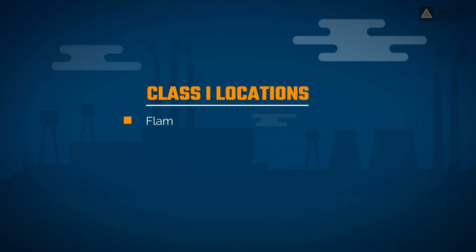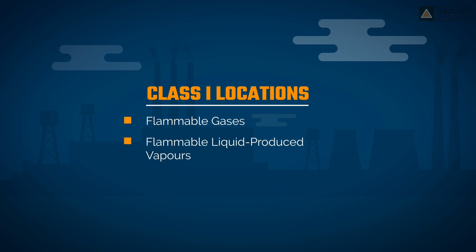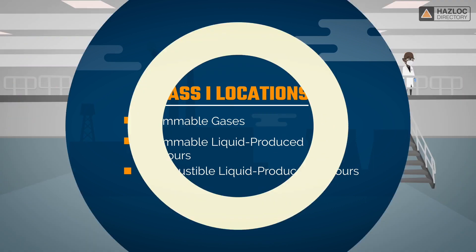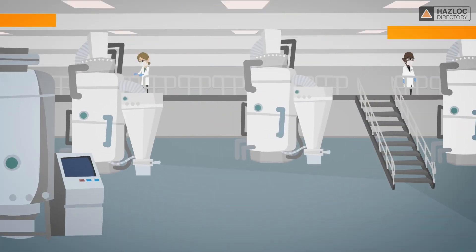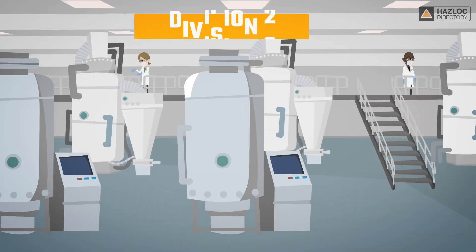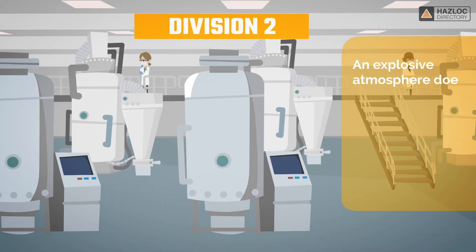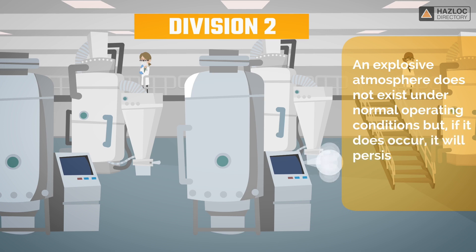Class 1 means that the location contains flammable gases, flammable liquid-produced vapors, or combustible liquid-produced vapors. Division 2 means a location where an explosive atmosphere does not exist under normal operating conditions, but if it does occur, it will persist for a short period only.